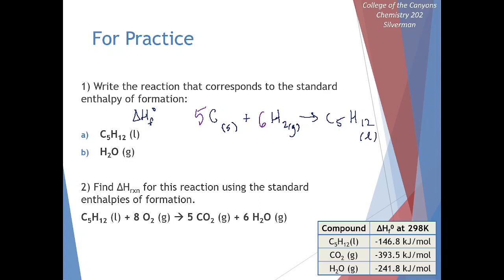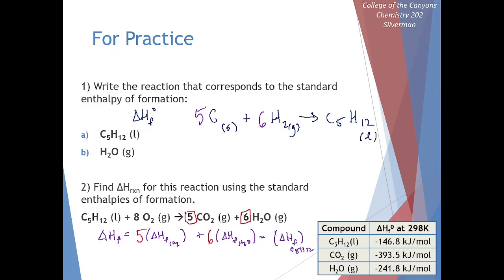We like to use these enthalpies of formation to do Hess's Law. For our second problem, we have pentane combusting with oxygen to form CO2 and water. We have a list of enthalpies of formation — we know the values for pentane, gaseous CO2, and gaseous water. We apply the Hess's Law formula by taking all of our products and subtracting all of our reactants. We need to keep in mind our coefficients: not once for CO2, but five times, so we multiply that enthalpy of formation by five.